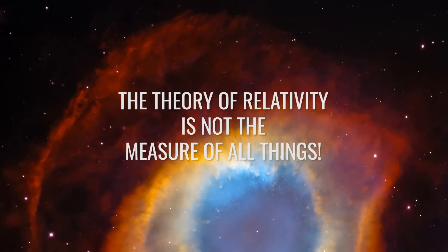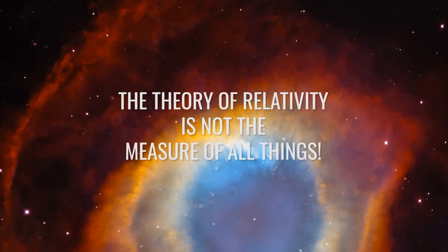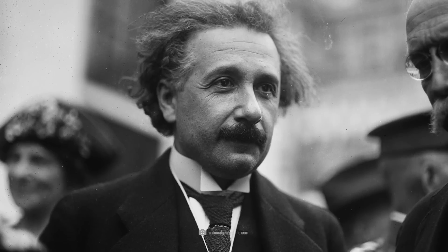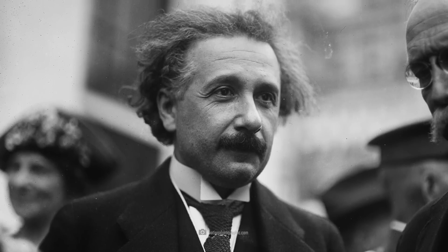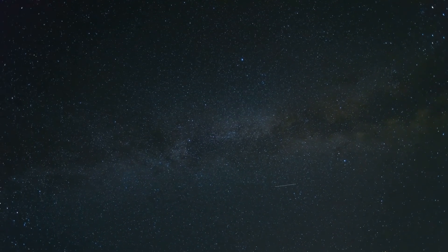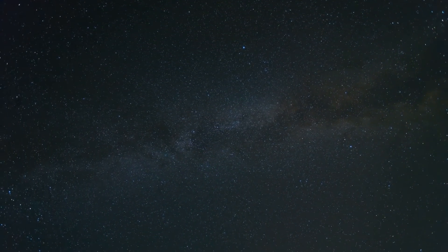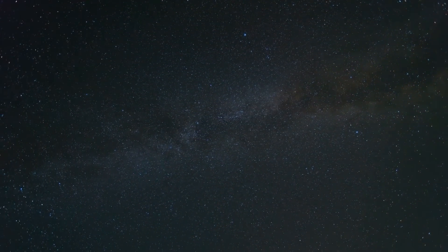The theory of relativity is not the measure of all things. Was Einstein wrong when he proposed the theory of relativity? Some modern theories, such as quantum gravity and string theory, call his assumptions into question.